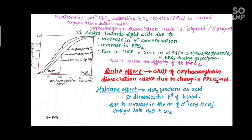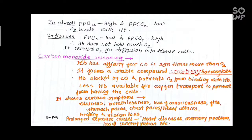It is also studied with the Haldane effect. The Haldane effect is that Oxy-Hemoglobin functions as an acid, decreasing the pH of blood. Due to an increase in the number of hydrogen ions and bicarbonate ions, these change into H2O and CO2.